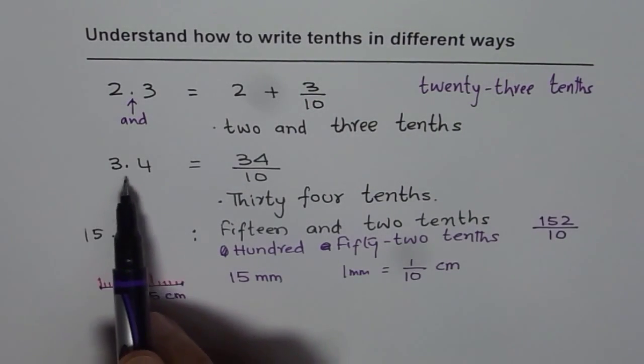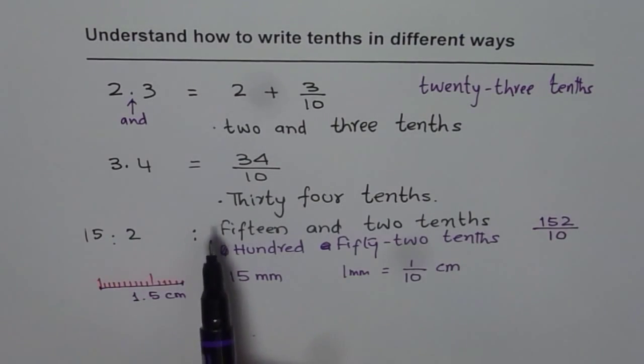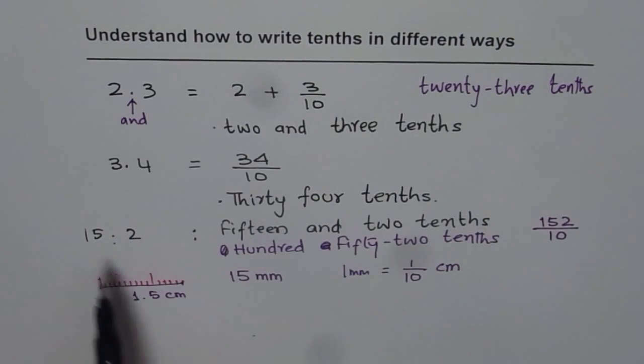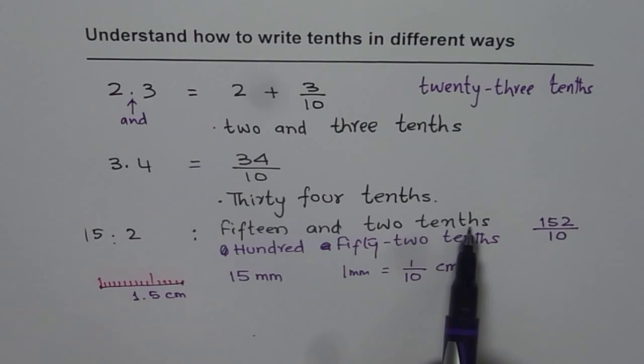3.4 can be written as 3 and 4 tenths, or 34 tenths. 15.2 can be written as 15 and 2 tenths, or 152 tenths.